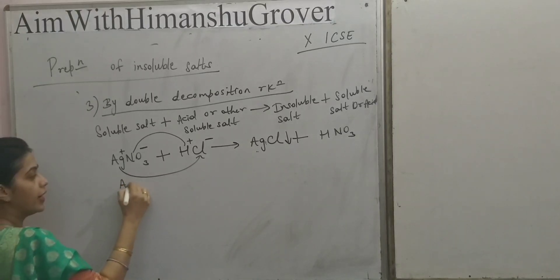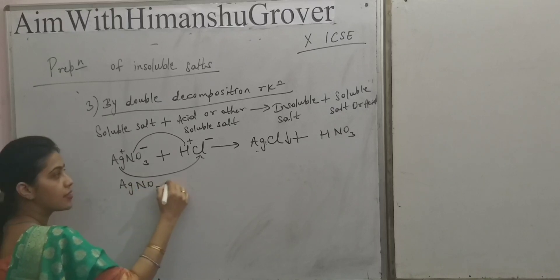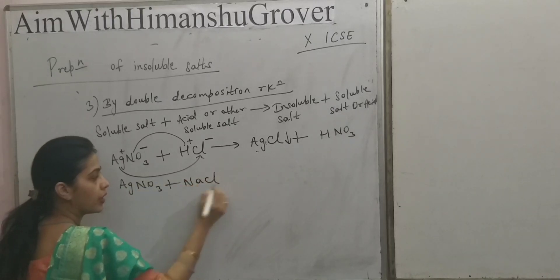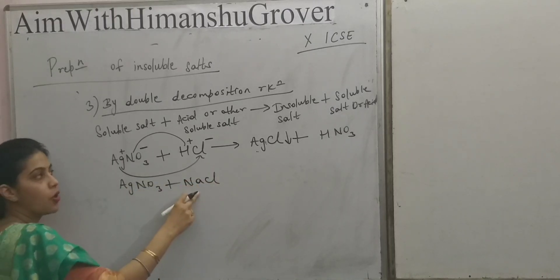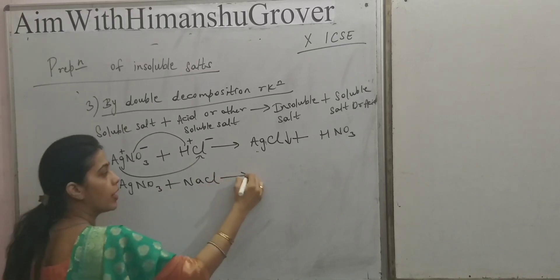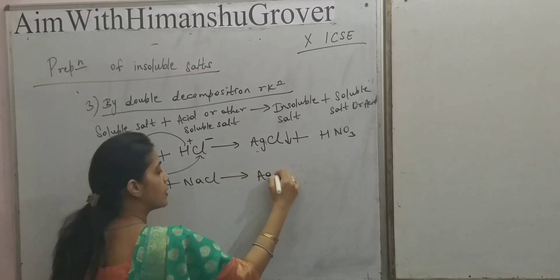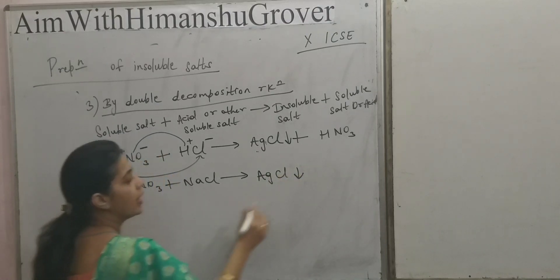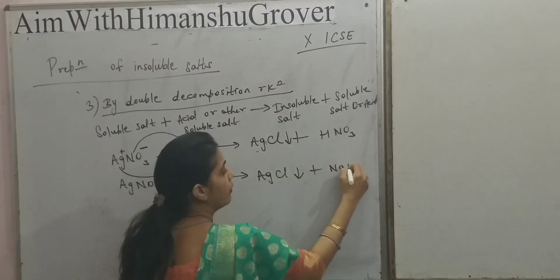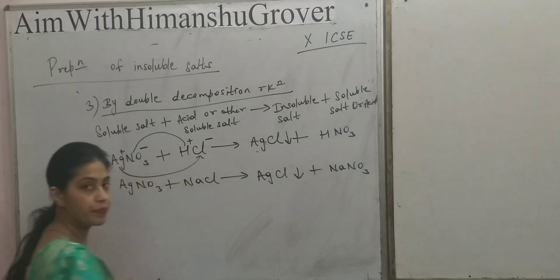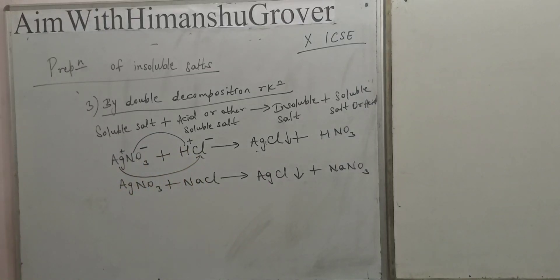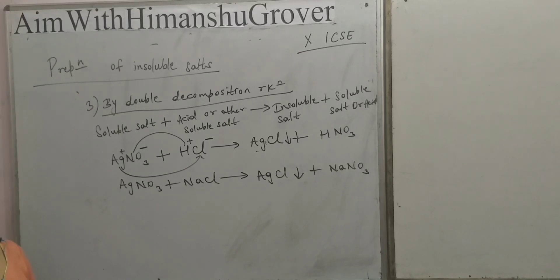If we take AgNO3 plus NaCl, which is also a soluble salt, then the product formed will be AgCl, which is a precipitate, plus NaNO3, which is a soluble salt. So this is also a double decomposition reaction, or precipitation reaction, from which an insoluble salt can be prepared.